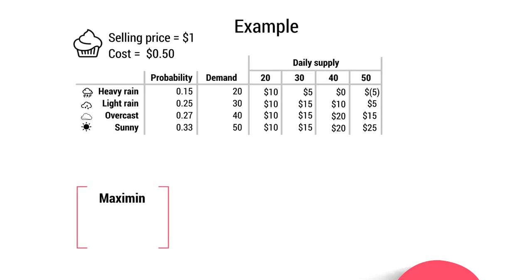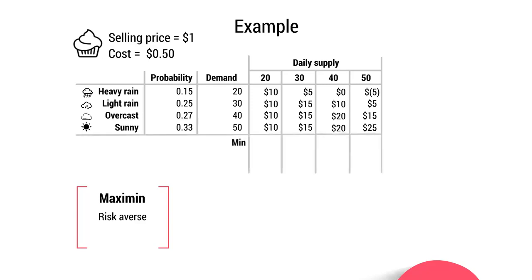We'll start by looking at the maxi-min model — making the maximum minimum profit — which is very popular amongst the risk averse. The minimum profit at each level of supply is: $10 for 20 cupcakes, $5 for 30 cupcakes, $0 for 40 cupcakes, and a $5 loss for 50 cupcakes. The highest minimum profit is $10, so a risk averse individual will bake 20 cupcakes because they are guaranteed $10 profit come rain or shine.